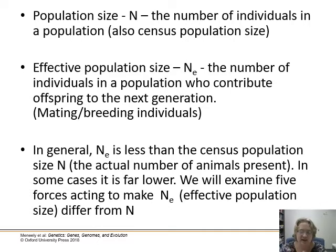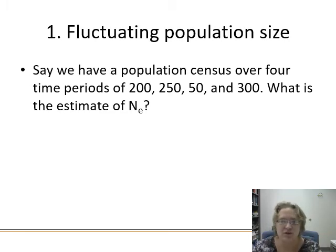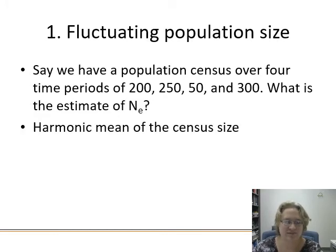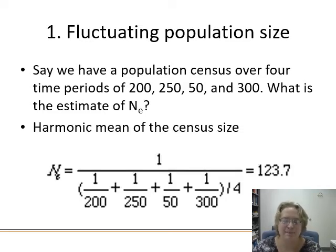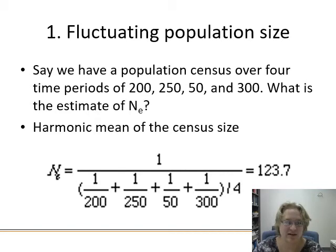There are five main forces that act to make effective population size lower than the census. The first is fluctuations — having your population go up and down over time. For example, with salamanders: year one you find 200, year two 250, year three a really dry year with only 50, and year four it rebounds to 300. To estimate effective population size, you find the harmonic mean: take one over each of the four year values, add them up, divide by four, then take one over that number. Even though we had good years, our effective population drops to 123 because of that one drought year — a bunch of genetic diversity was lost and it'll take a while to recover.